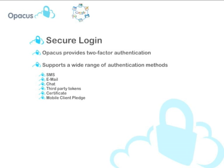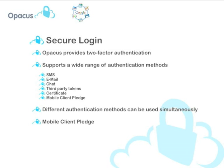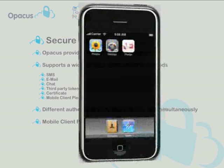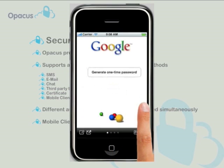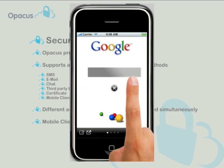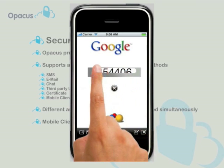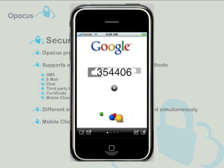With Pledge, you no longer need expensive hardware tokens to achieve two-factor authentication when logging into your Google Apps. All you need for a secure login is your mobile phone. Different authentication methods can be used simultaneously, making Opicus one of the most flexible products on the market. Here you can see how easy it is to generate a one-time password with Pledge so you can log in securely to Google Apps. You simply start your Pledge application on your mobile phone, press Generate One-time Password, and there you go! A one-time password has been generated, ready to be used when logging into Google Apps.